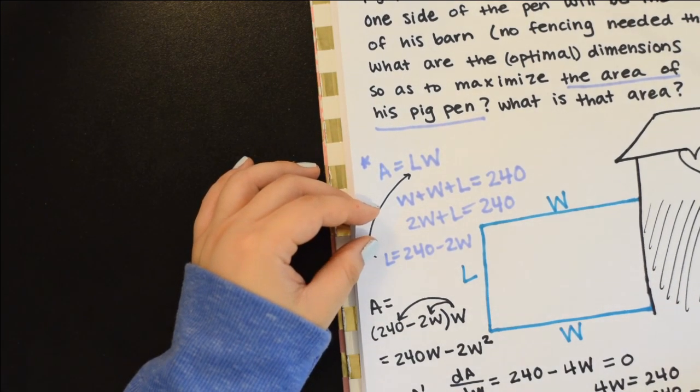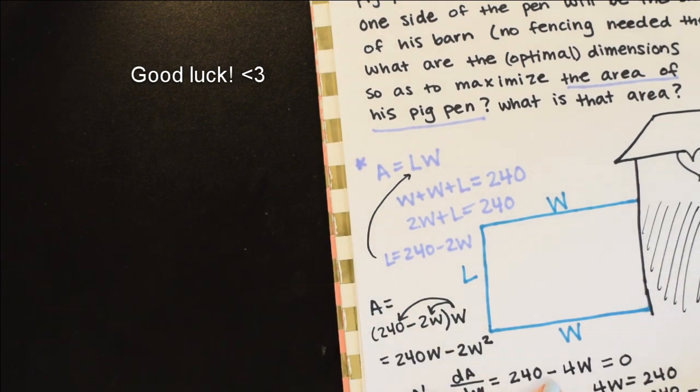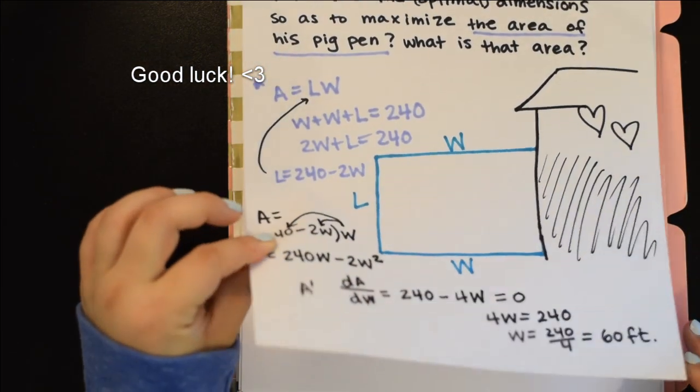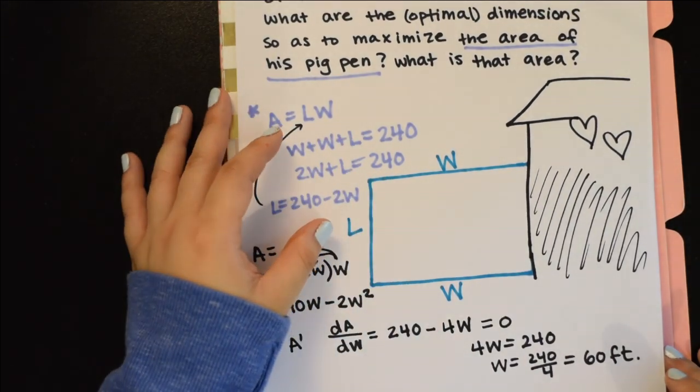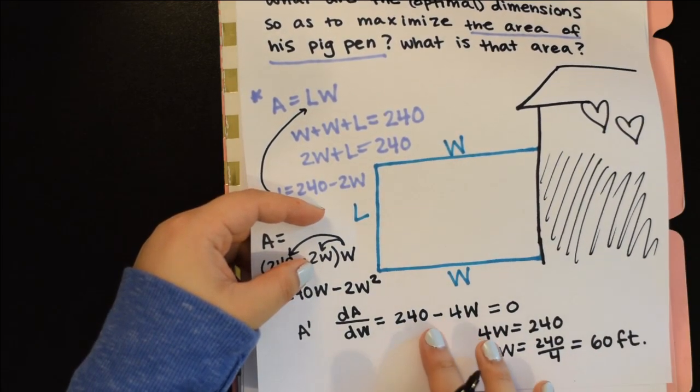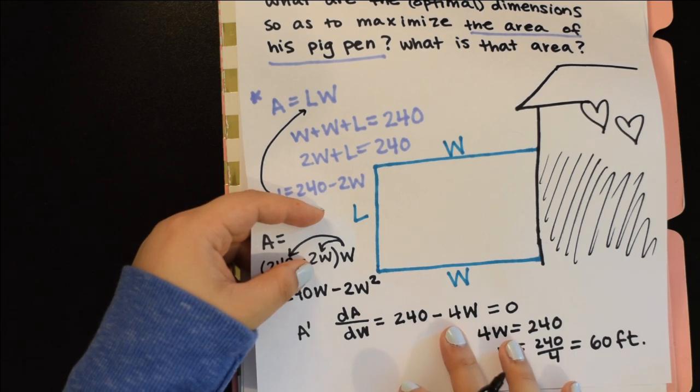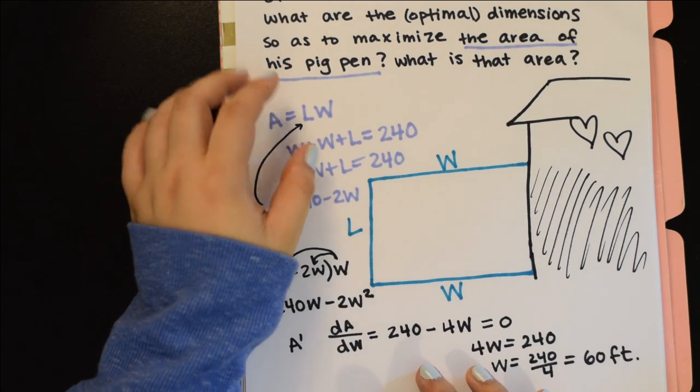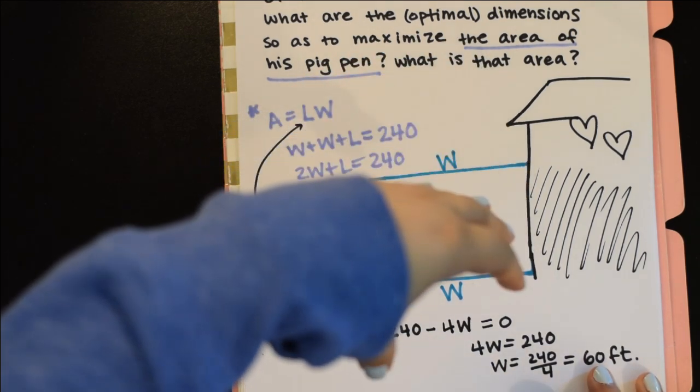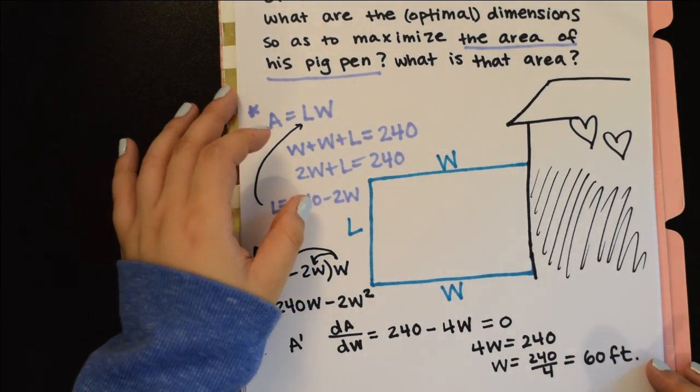If we want to show whether that is a maximum or a minimum, we could just go ahead and take another derivative. If it's a free response question, you'll want to show that it's actually a maximum. Take a second derivative here, that would be negative 4. Since that is less than 0, specifically at W equals 60, it's always concave down, meaning we are at a local maximum.